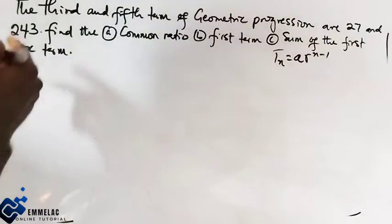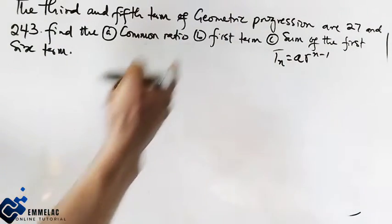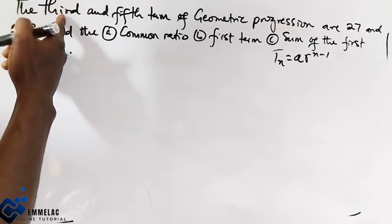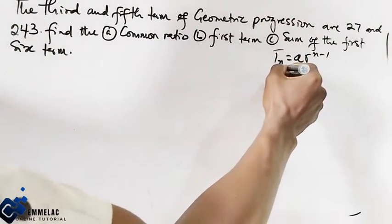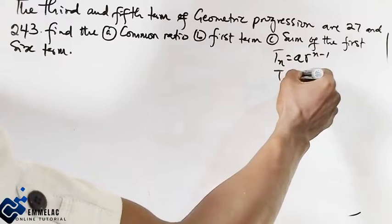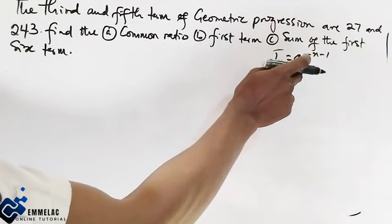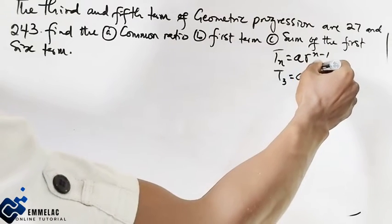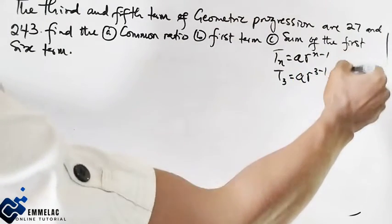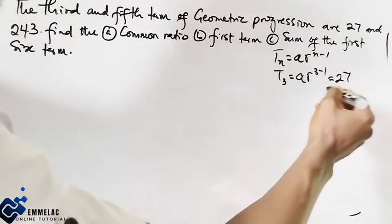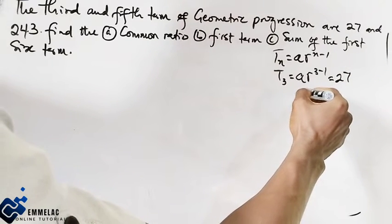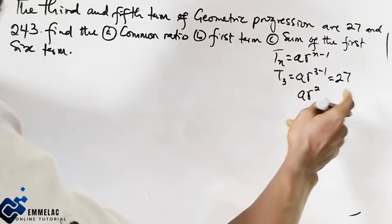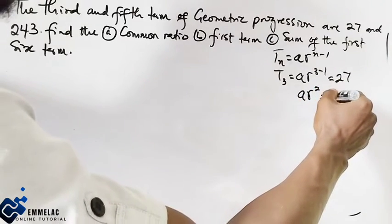From the problem, the third term is given as 27. We don't know the first term A, so we write: A times R raised to the power 3 minus 1 equals 27, which gives us AR² equals 27.